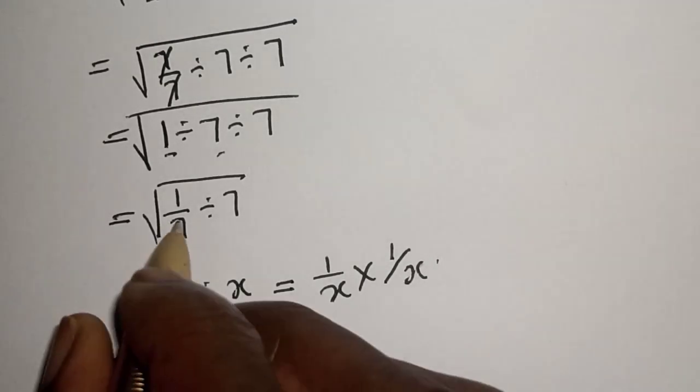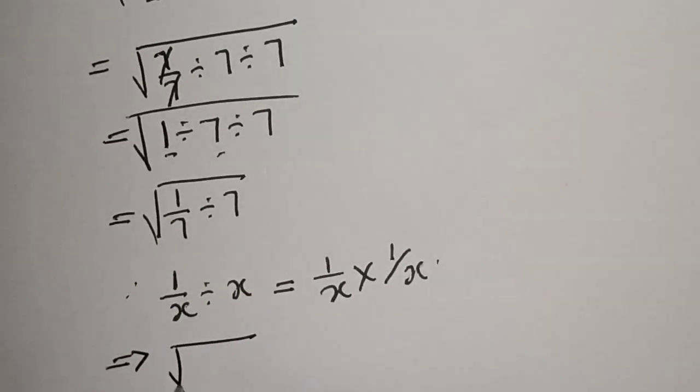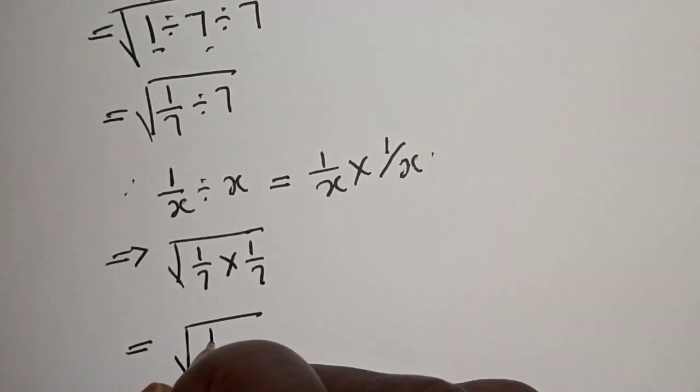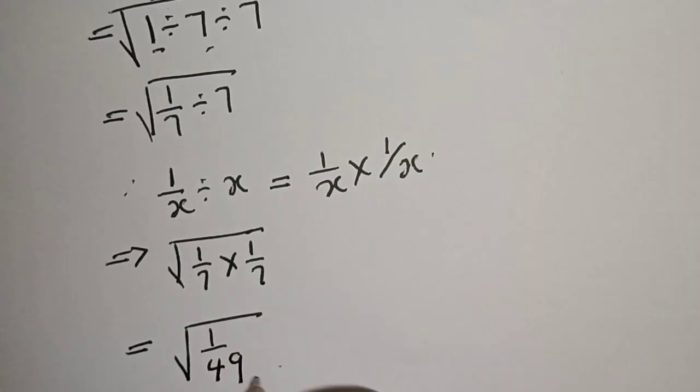So therefore, we have square root of 1 over 7 multiplied by 1 over 7. This is equal to square root of 1 over 49.